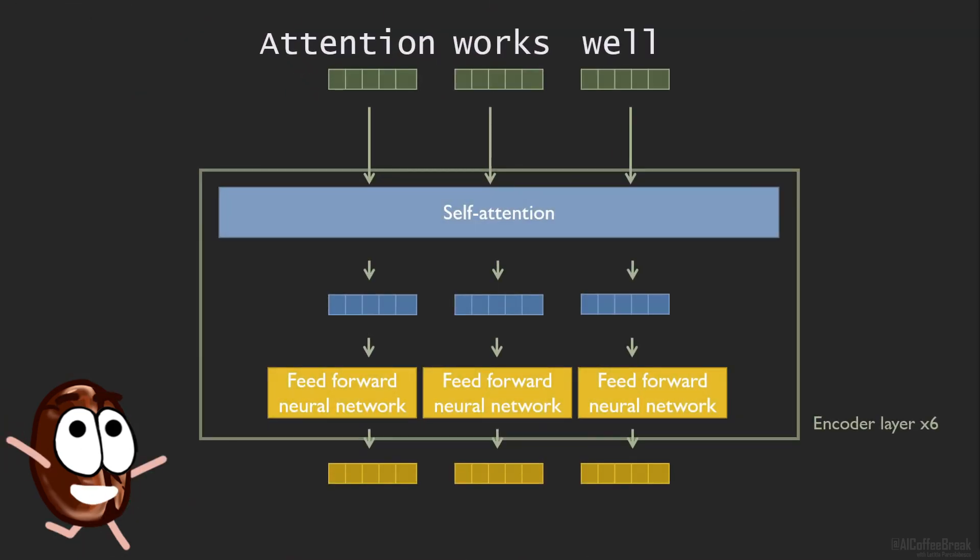But then everything changed with the introduction of transformers doing masked autoencoding, which happened first for NLP. Think about BERT, which is doing what a masked autoencoder does. It corrupts a portion of the data, usually 15% of the tokens, and BERT learns to predict the missing content.